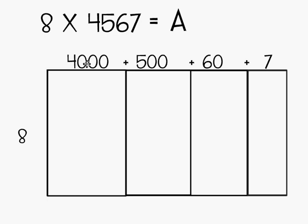So when I break it down into expanded form, I know that there are 4 thousands, there are 5 hundreds, there are 6 tens, and there are 7 ones. So I'm going to put that on the top of my rectangle. My other factor goes on the other side.